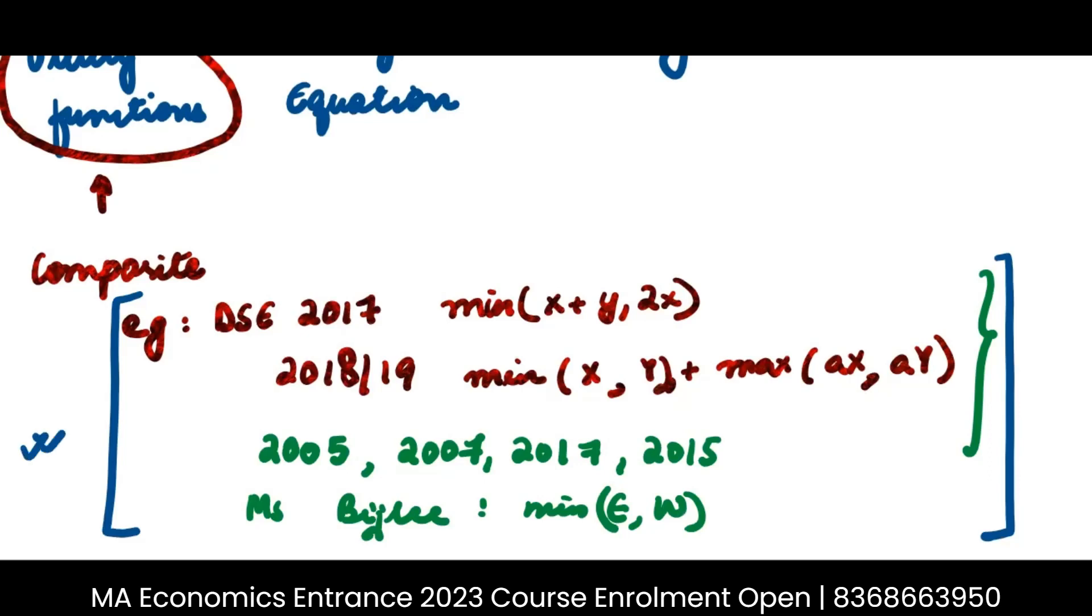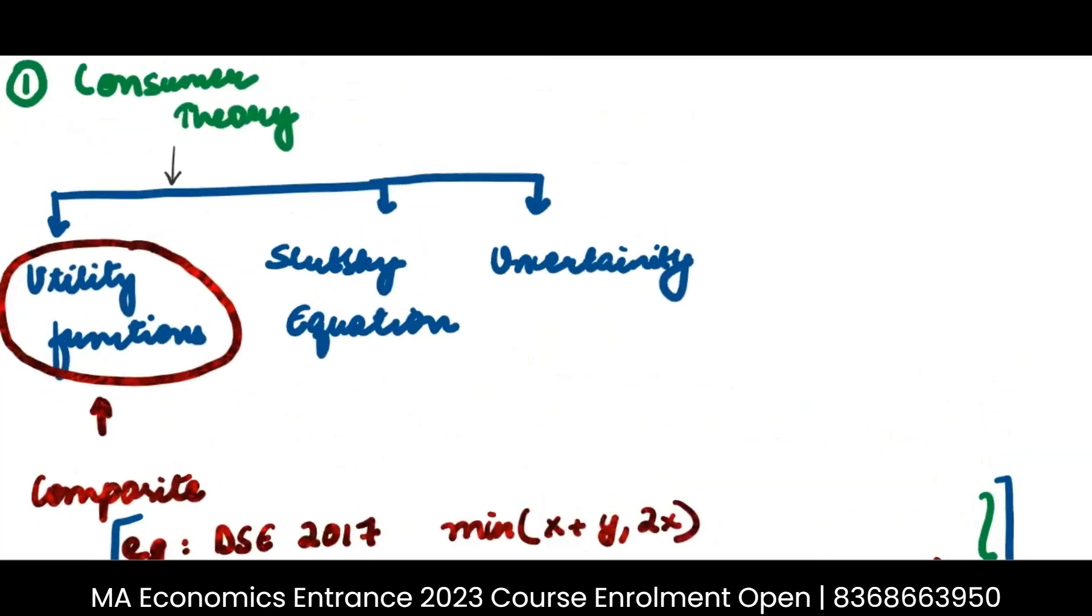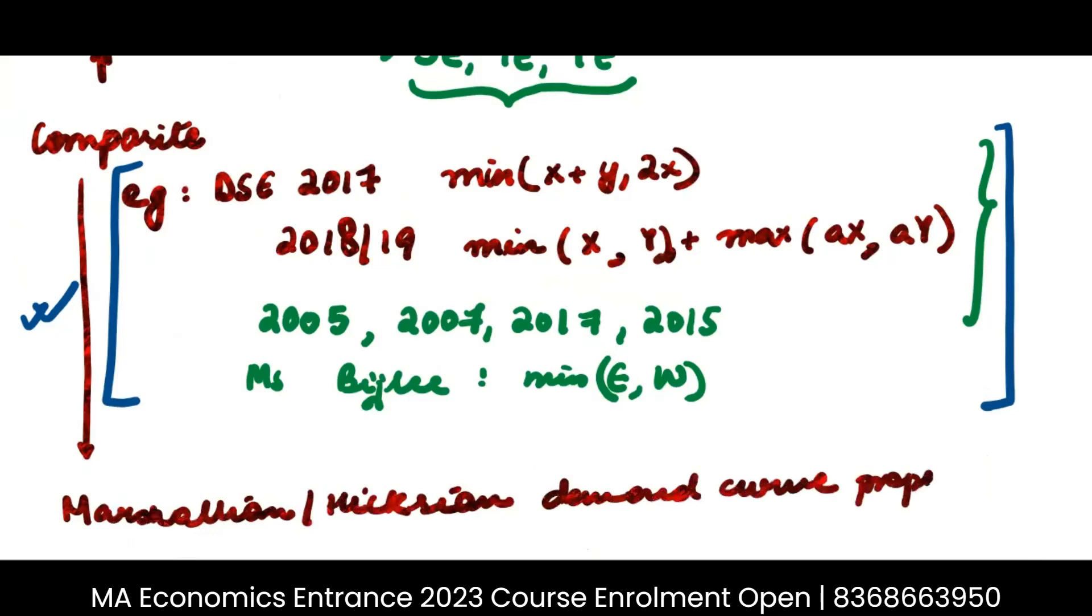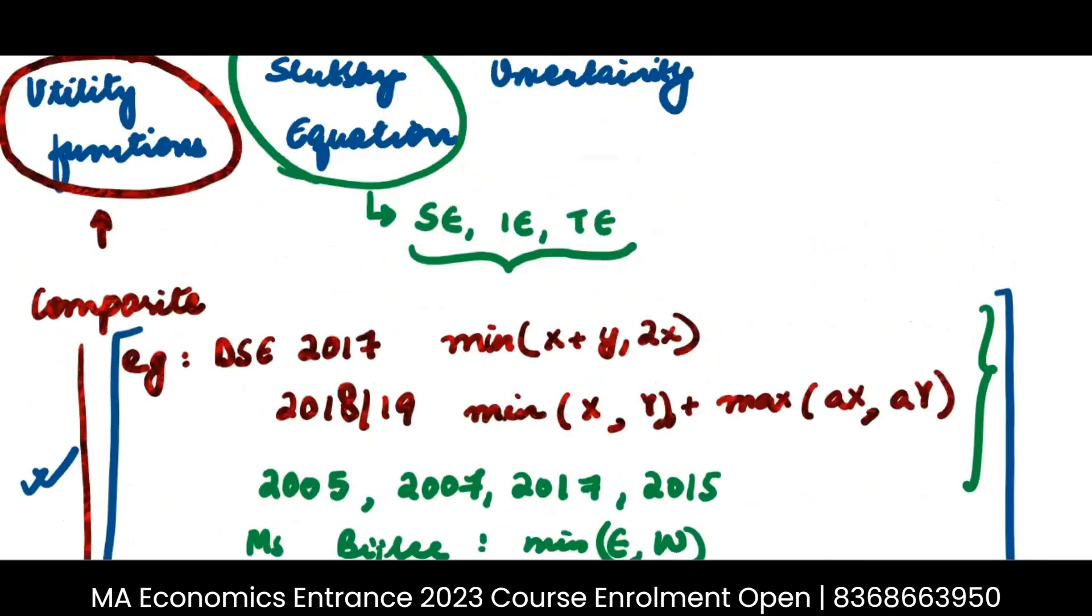This will definitely come in exam. This is kind of one of the questions that come in exam. Then the second kind of questions that you have to focus on are the Slutsky equation questions. So here you should know what is substitution effect, what is income effect, what is total effect. And you should be able to calculate these things here. Here one more thing can come. They can ask to question on Marshallian, Hicksian, Demand Curve Properties. Not directly, some way or the other, they will give you this.